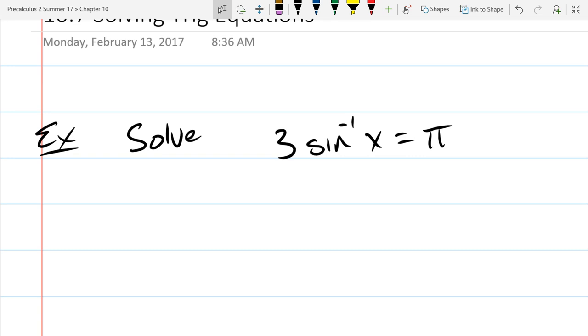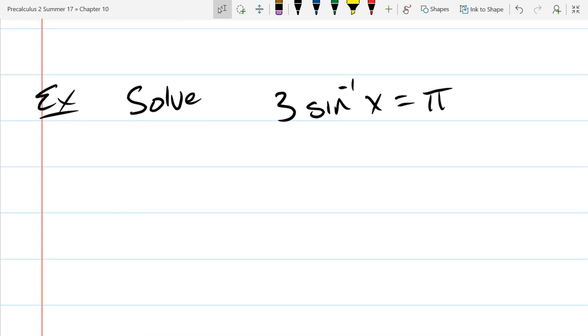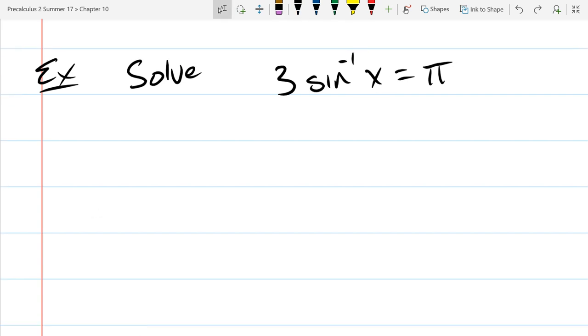Now it won't say solve for which variable, but these equations will have one variable in them. Pi is not a variable, pi is a number. The variable is x, so we need to solve for x. The way we're going to do that is get everything else out of the left side. So to get the three out we're going to multiply by a third.